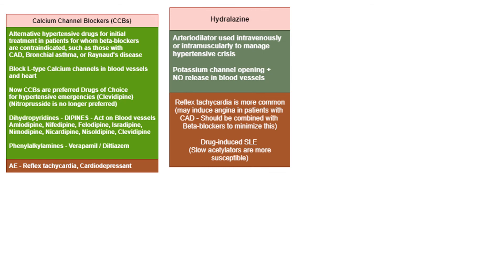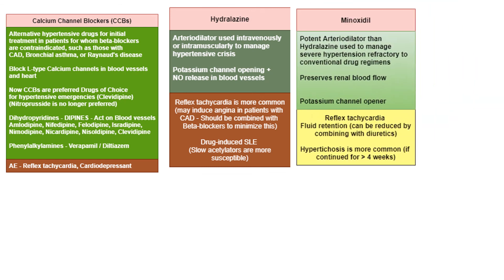Hydralazine is metabolized by acetylation and may cause drug-induced systemic lupus erythematosus; slow acetylators are more prone to this adverse effect. Minoxidil is a more potent arteriodilator than hydralazine, used to manage severe hypertension refractory to conventional drug regimens. It preserves renal blood flow and is a potassium channel opener. It causes reflex tachycardia and fluid retention, reducible by combining with diuretics. The most important adverse effect is hypertrichosis when used for more than four weeks; topically, minoxidil is available for hair growth on bald heads.